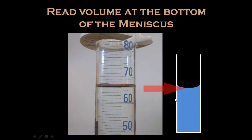It's important to measure from the bottom of the curve. This curve, indicated by the arrow, is called the meniscus. In the example here on the left, you should carefully read this as 66 milliliters of liquid.